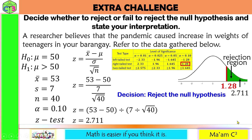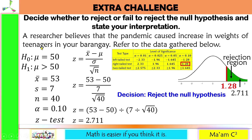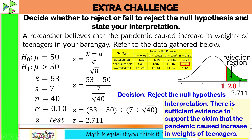For the interpretation: we reject the null hypothesis because there is sufficient evidence. By rejecting the null hypothesis, we support the alternative hypothesis. The researcher believes the pandemic caused an increase in weights of teenagers. So in words: there is sufficient evidence to support the claim that the pandemic costs increase in weights of the teenagers. When rejecting, state there is sufficient evidence; when failing to reject, state there is insufficient evidence.